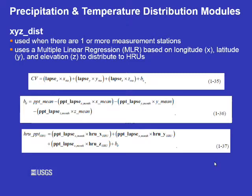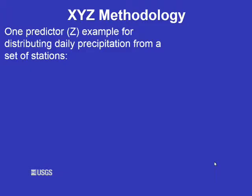The next module is the XYZ_dist module. You can use this when there are one or more climate stations. The XYZ_dist module uses a multiple linear regression based on longitude, latitude, and elevation to distribute the climate variable (CV) to the HRU. Equation 135 is the multiple linear regression equation. You have to determine the lapse rates for X, Y, and Z. The module solves for the intercept B0 in equation 136, which is then plugged into equation 137 with the HRU's longitude, latitude, and elevation to get the HRU CV.